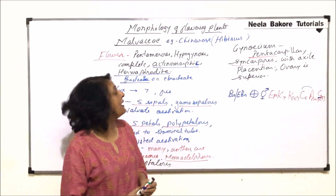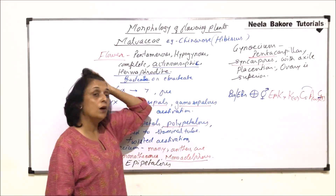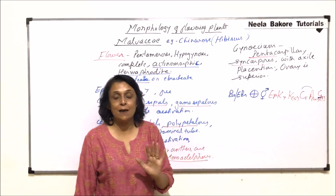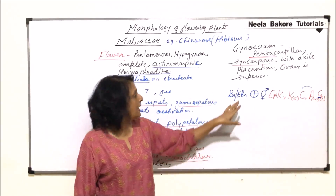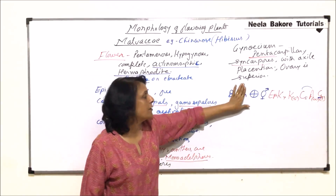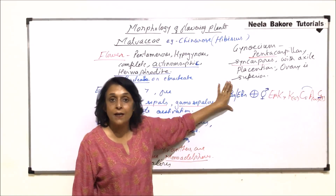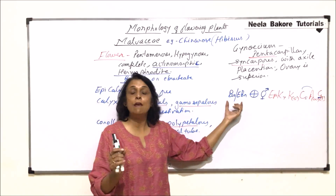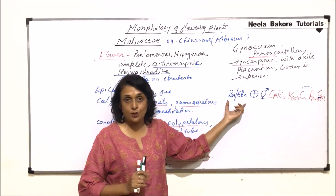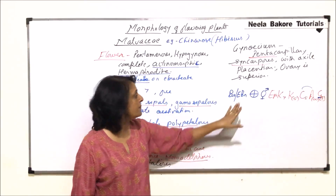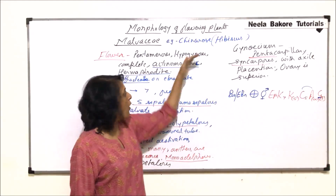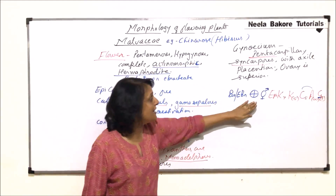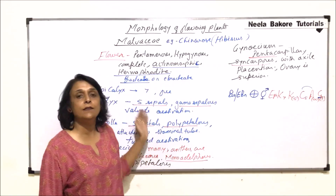This is the floral formula for the Malvaceae family, and since we've written it for the whole family, we've written both possibilities. If we are taking an example of a specific plant and bracts are present, we will not write EBr; if bracts are absent, we will not write Br. For the family we give all the options, and from this description we arrive at the formula — or if we interpret the formula, we get the same description.